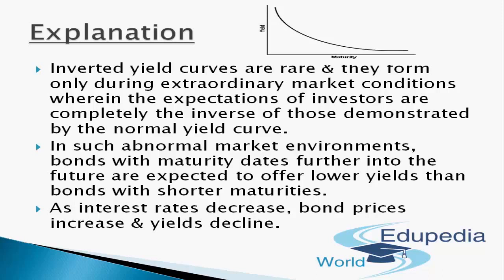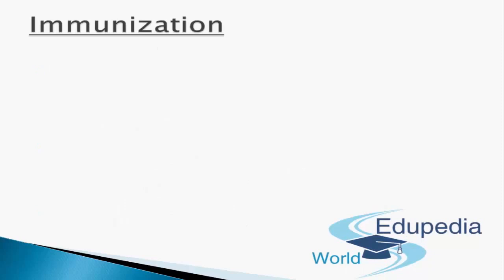So that was all about those three yield curves: normal, flat, and inverted. Normal says the market will remain stable and grow with the economy. Flat indicates a confused state — whether interest rates will rise or fall. Inverted says it's an absolutely abnormal market where bond prices can fall at any time and yields and interest rates will decline accordingly. Now let's move on to the next topic: immunization.